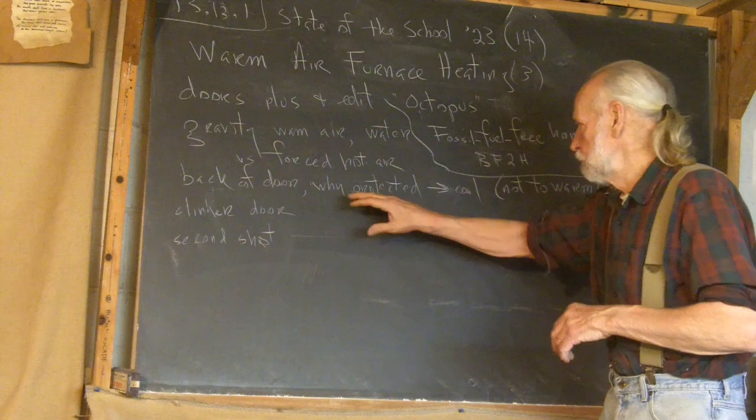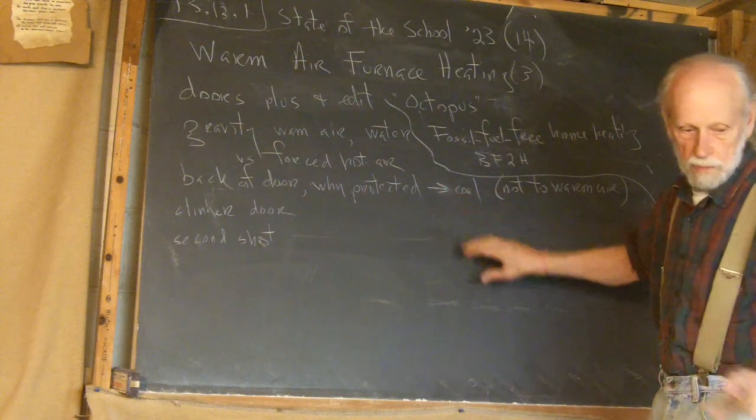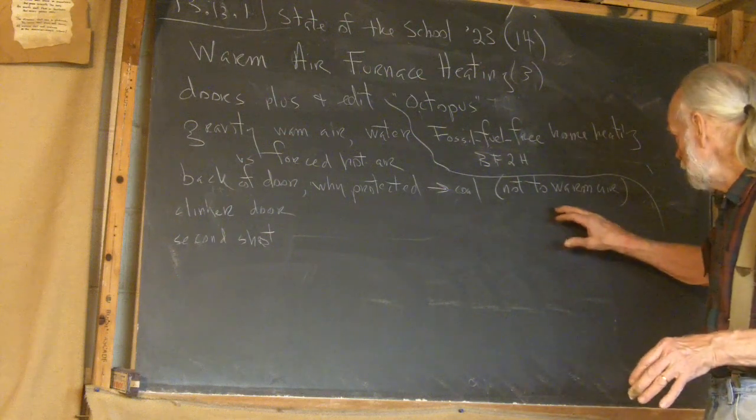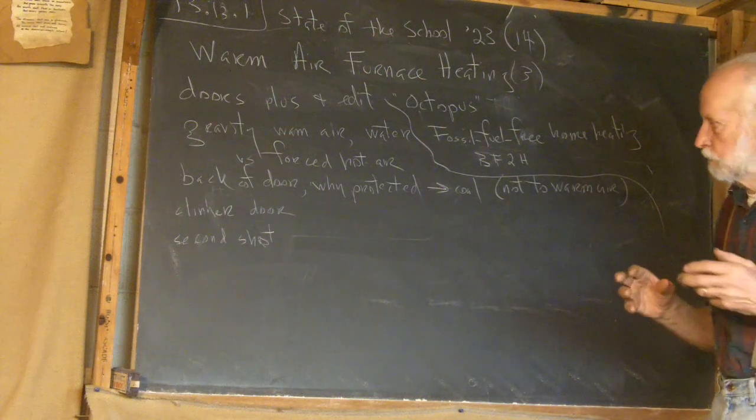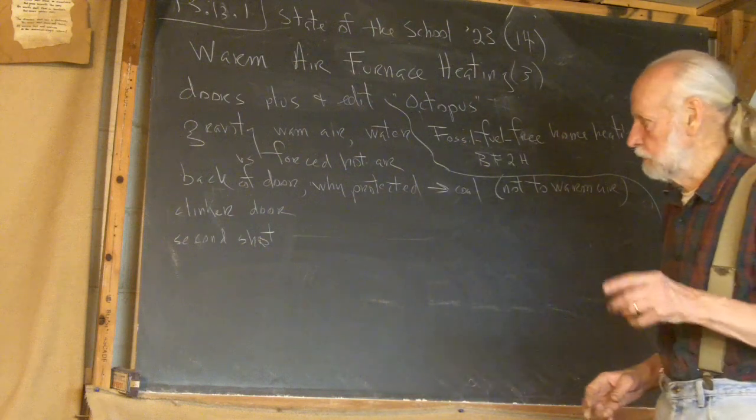So, the back of the door, why protected? That had to do with coal. That would not be really necessary with wood. And its purpose was not to warm air. I dealt with that. And I think I showed you the clinker door.